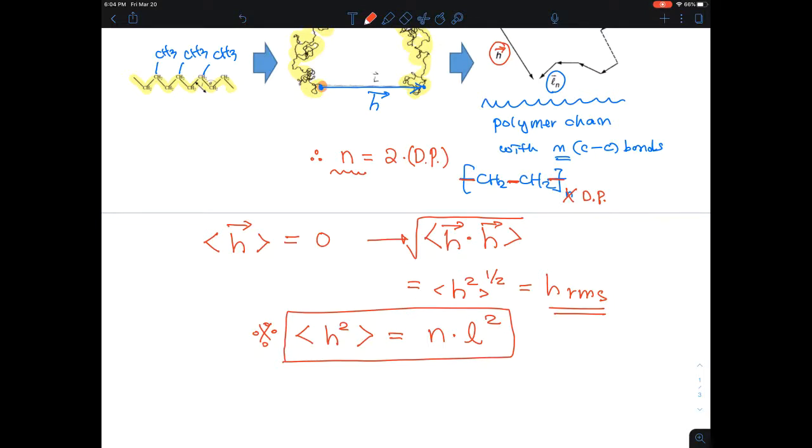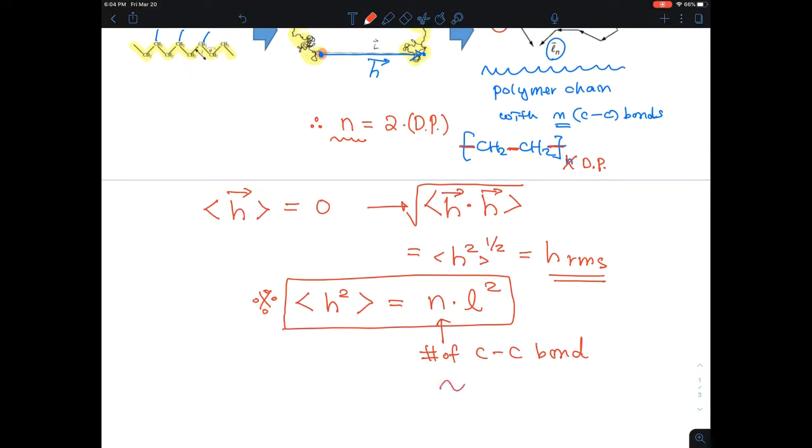And so that means, this n is the number of carbon-carbon bonds, which is proportional to molecular weight of polymers. Right?